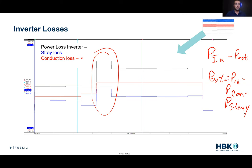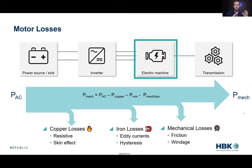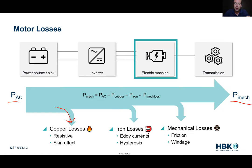Now looking at the electric machine: we have AC input and mechanical output. Mechanical power = AC power − copper losses − iron losses − mechanical losses. Copper losses have the resistive element, iron losses are eddy currents and hysteresis, and mechanical losses are friction and windage. Fortunately, we can characterize each of these components.